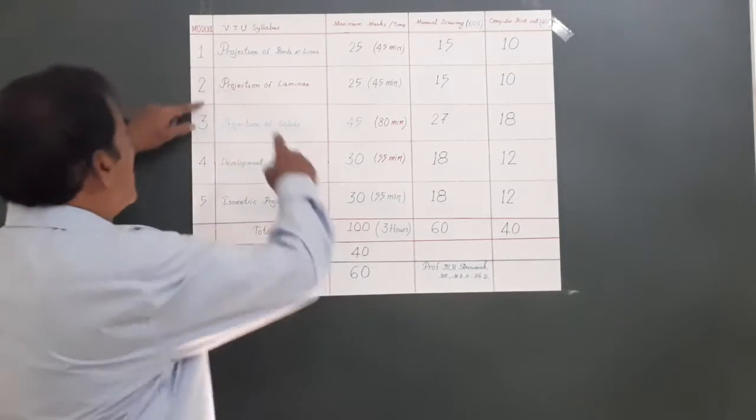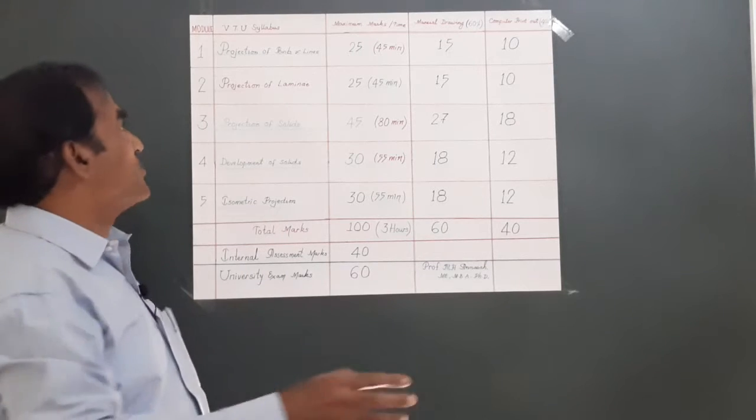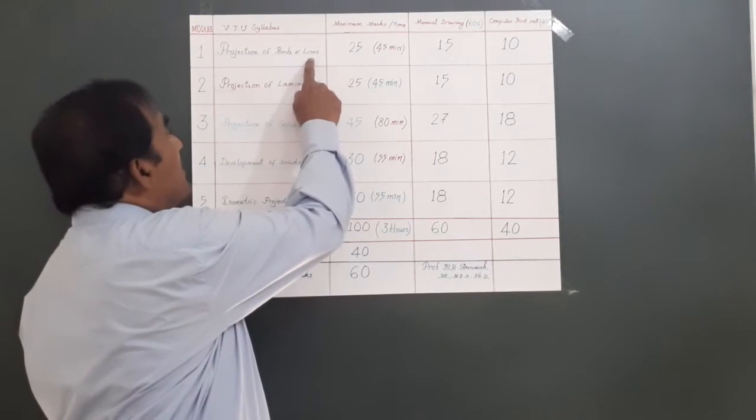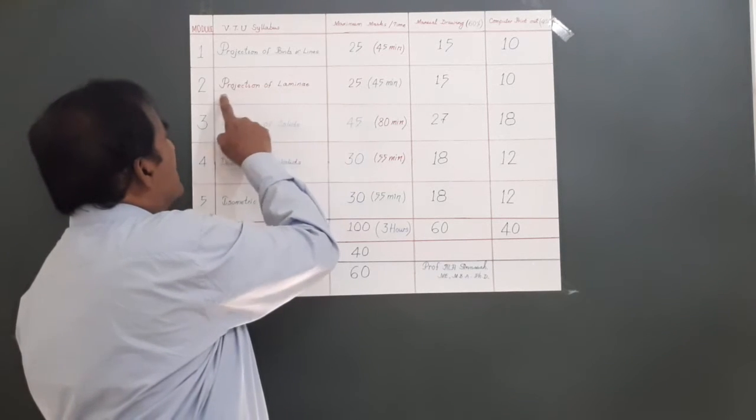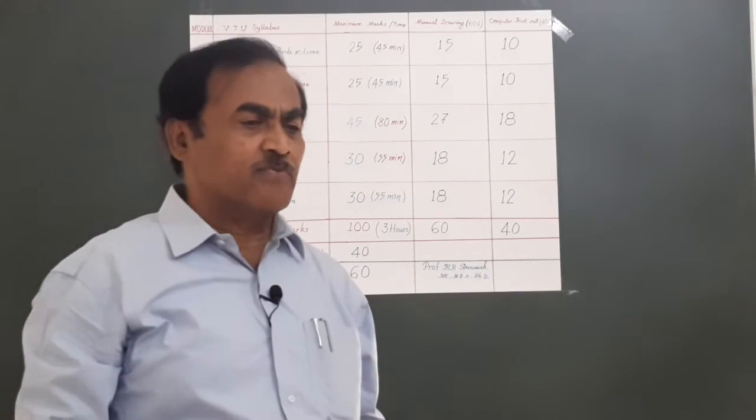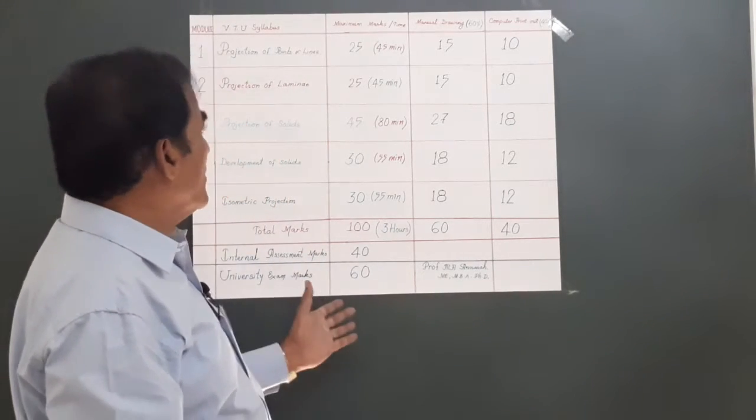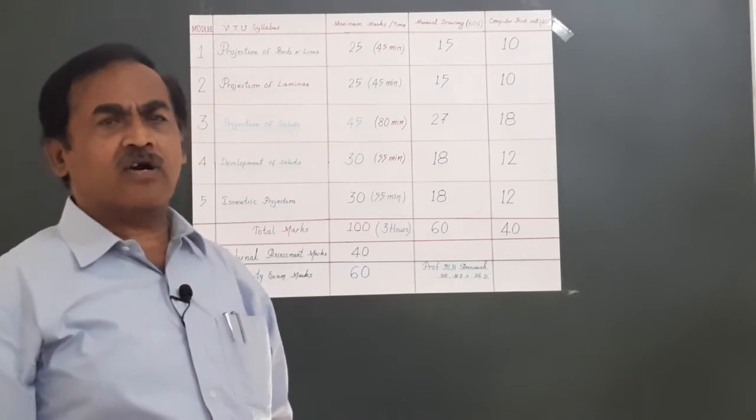The happy news is that you have a choice between module 1 and module 2. You have the choice to answer either the module on points and lines or lamina. You should preferably prepare both. If you prepare both modules, you will not have any difficulty scoring 25 marks out of 25.